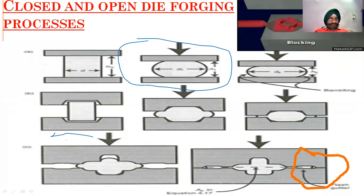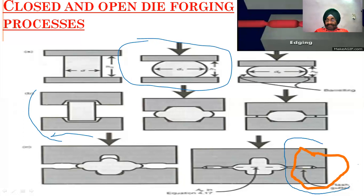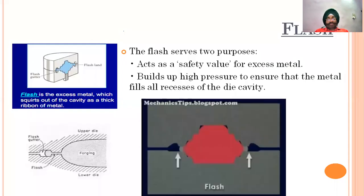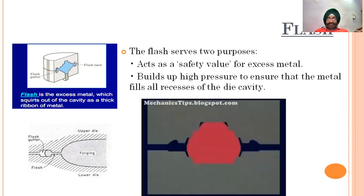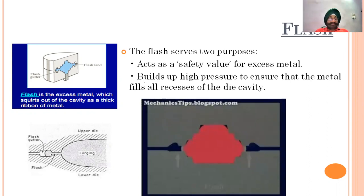In closed die forging, we punch the metal in a specific direction and put metal under pressure on the sides — shown in orange color in the diagram. The flash comes out from the die. The flash serves two purposes: first, it acts as a safety valve for excess metal; second, it builds up high pressure to ensure that the metal fills all recesses of the cavity. The flash is back pressure that fills the cavity, coming out as a thick ribbon of metal.